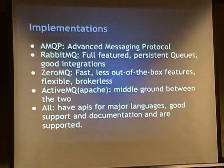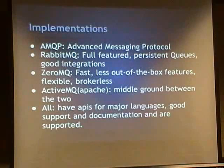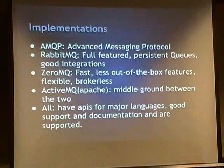RabbitMQ is kind of full-featured. You can have persistent queues - so if a server goes down and your broker goes down, when you start it back up it'll start back from where it was instead of losing that data. ZeroMQ - it can have brokers, but out of the box it's brokerless, and it doesn't have a persistent cache. So if something goes down, you could lose that data. If maintaining all data is very important, it might not be the best choice, or you'd be doing more work to make it persistent.